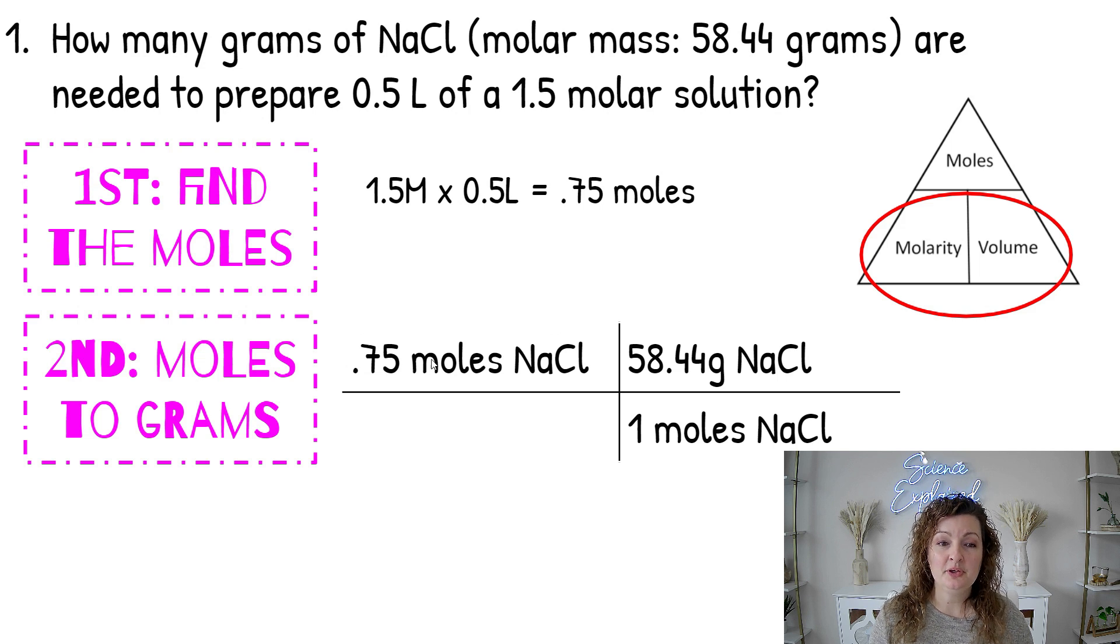Okay, so we're going to put that 0.75 moles in our stoichiometry bridge. Diagonal down has to be the same thing, so one mole is going to equal the molar mass which they gave us. If they didn't give it to you, you can go to the periodic table and calculate it.